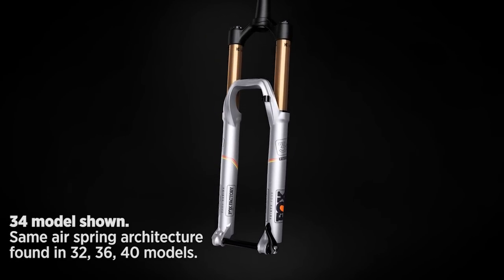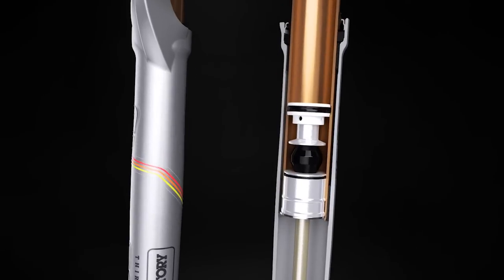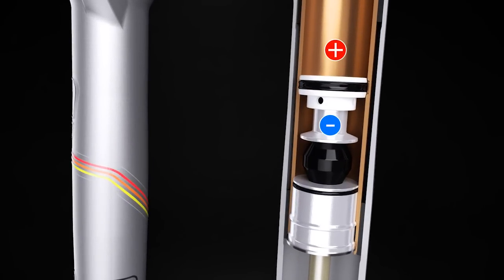When a float fork is fully extended, a bypass port allows air to flow around the air piston seal, joining the positive and negative air chambers. The bypass port ensures that both air chambers have equal pressure at any pressure setting, allowing every rider to benefit from a perfectly balanced air spring.